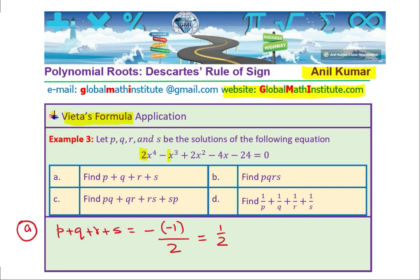Now let's do part B, which is the product of roots. Product of roots, since this is degree 4, it will be the positive ratio of the constant coefficient, which in this case is -24 divided by the leading coefficient 2, and that gives us -12. Do you see how easily we figured it out? For part B, we take the constant divided by the leading coefficient. That is how you do the product of roots. Absolutely clear.